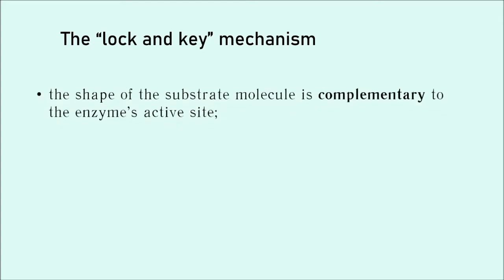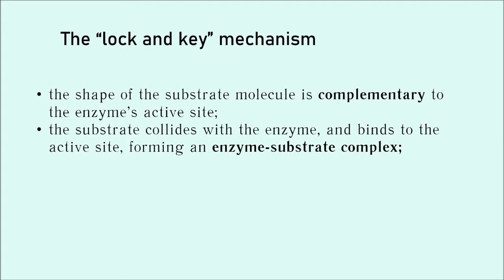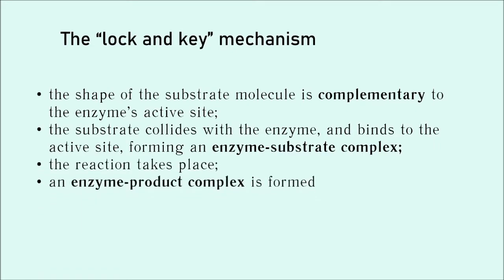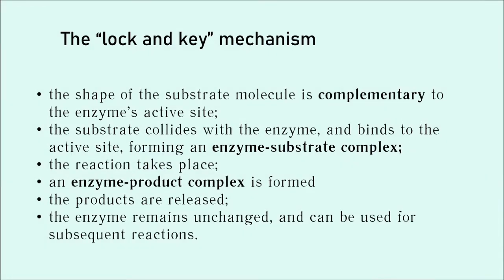At A-level we have to go into a bit more detail. We have to say that the shape of the substrate molecule is complementary to the enzyme's active site. And please say enzyme's active site, not enzyme. The shape of the substrate molecule is only complementary to the place where the reaction takes place, and that is of course the active site. We then have to say that the substrate collides with the enzyme and binds to the active site, forming an enzyme substrate complex. That's the term that we have to use. Then the reaction takes place, and then we form an enzyme product complex. Finally the products are released, and the enzyme remains unchanged. This means it can be used for further reactions.